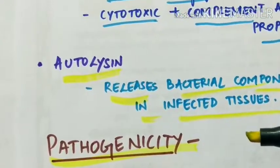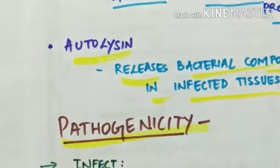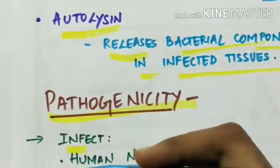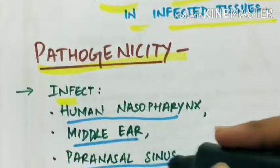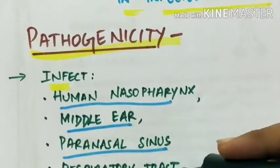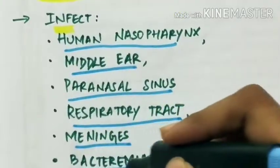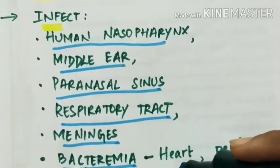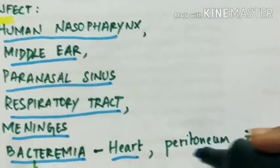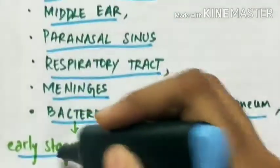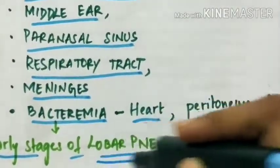Pathogenicity. The Streptococcus pneumoniae infects human nasopharynx, middle ear, paranasal sinus, respiratory tract, meninges, and it can also cause bacteremia through which the infection spreads to the heart, peritoneum, and joints. The bacteremia occurs in the early stages of lobar pneumonia.